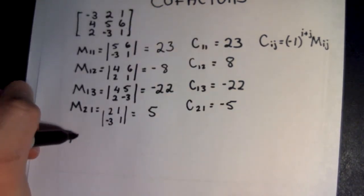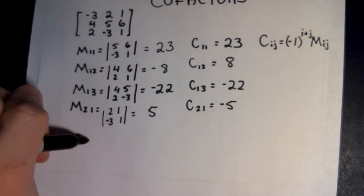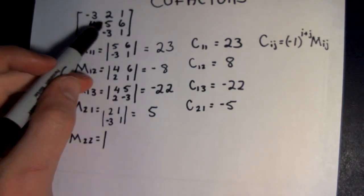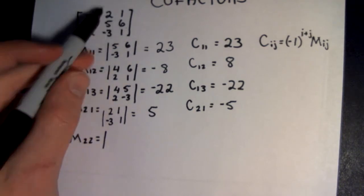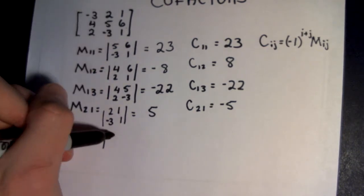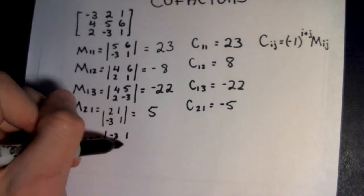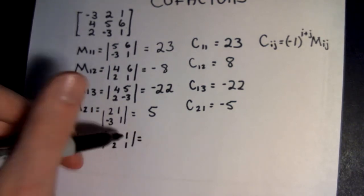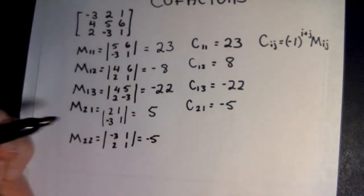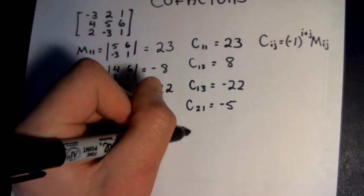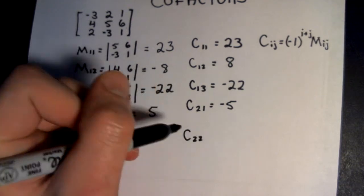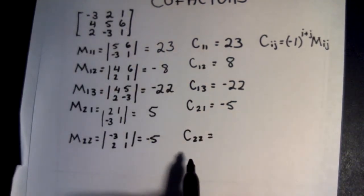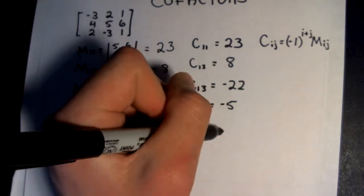Now we look at the minor M22. We get rid of this row and this column, so we have negative 3, 1, 2, 1. We multiply negative 3 by 1 and subtract 2, so that's going to be negative 5. For the cofactor C22, negative 1 to the 4th is 1 times negative 5, so it just stays negative 5.